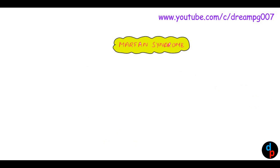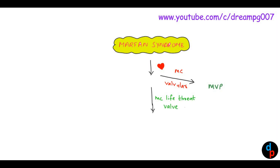Let's have a look into cardiovascular features in Marfan Syndrome. The most common valvular abnormality associated with Marfan Syndrome is mitral valve prolapse. The most common life-threatening valve lesion associated with Marfan Syndrome is aortic regurgitation. The most common cause of death in Marfan Syndrome is due to aortic dissection.